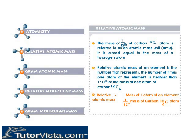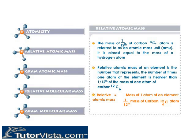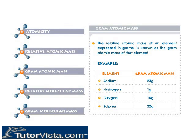Relative atomic mass is equal to the mass of one atom of an element divided by one-twelfth the mass of a carbon C-12 atom. Gram atomic mass: The relative atomic mass of an element expressed in grams is known as the gram atomic mass of that element.